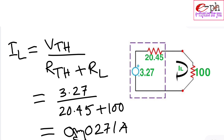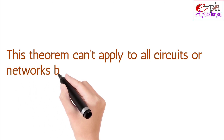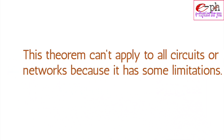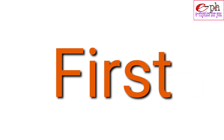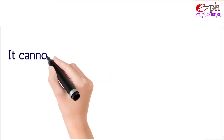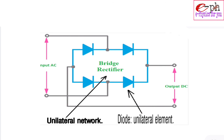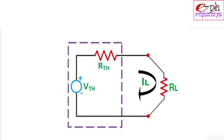This theorem cannot be applied to all circuits or networks because it has some limitations. First, it cannot be applied to non-linear networks. Second, it cannot be used for determining the efficiency of the circuit. Third, it is not applicable to unilateral networks. Fourth, there should not be magnetic coupling between Rth and RL.